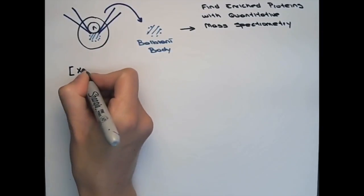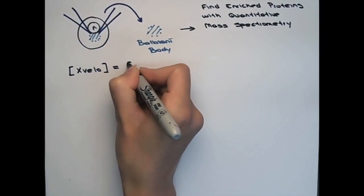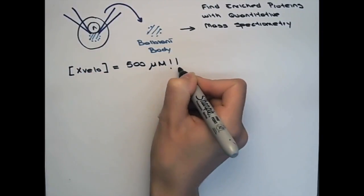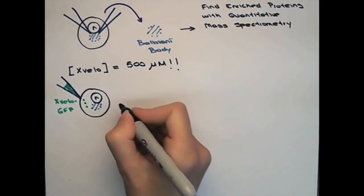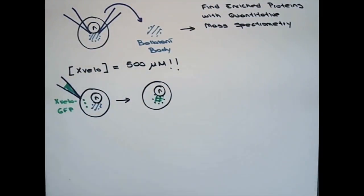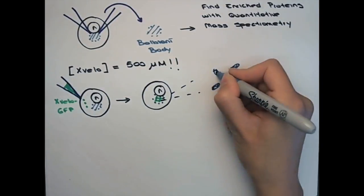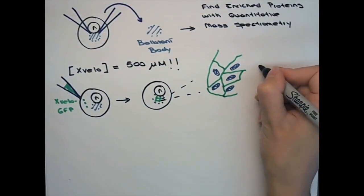One protein, called Xfelo, was present in extremely high concentration in balbionibodies. Upon injection into oocytes, Xfelo localizes to the balbionibody and forms a stable matrix to fill the gaps between the mitochondria. Xfelo looks like the glue that holds the balbionibody together.